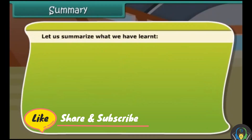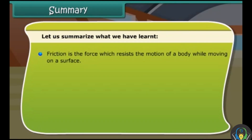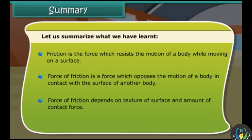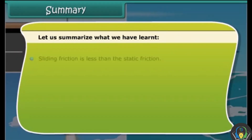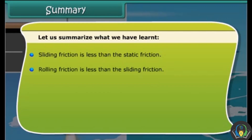Let us summarize what we have learned. Friction is the force which resists the motion of a body while moving on a surface. Force of friction is a force which opposes the motion of a body in contact with the surface of another body. Force of friction depends on texture of surface and amount of contact force. Sliding friction is less than static friction, and rolling friction is less than even sliding friction.